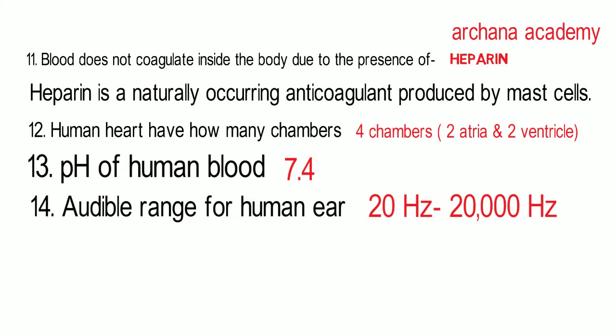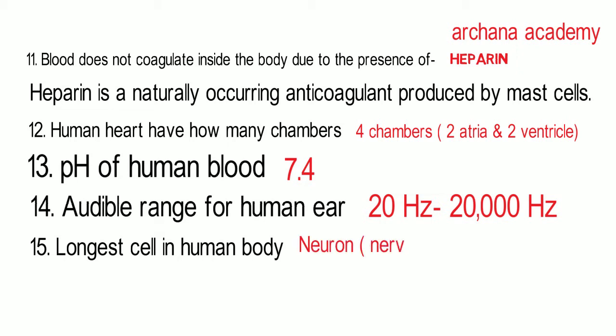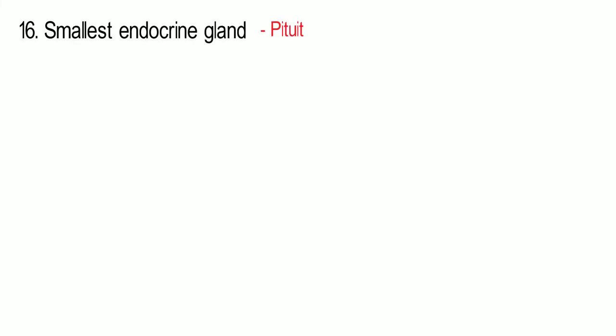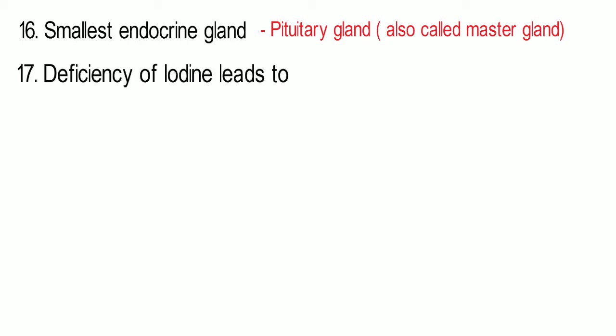The audible range of the human ear is 20 Hz to 20,000 Hz. The smallest endocrine gland is the pituitary gland, which is located in the brain. The pituitary gland is also known as the master gland.